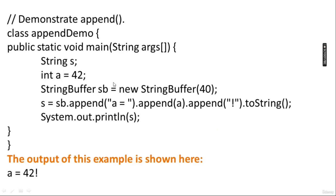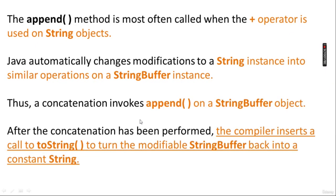For example: StringBuffer sb = new StringBuffer("Number is "); sb.append("a = ").append(a).append('!').toString() and we print the string. First it saves 'a = ', then appends 'a' — whose value is 42 — so it will be converted to string: 'a = 42', then appends '!' and converts to string. Then we print this value.